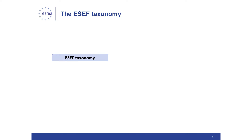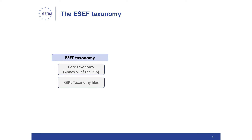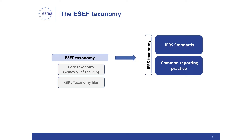Preparers also need to familiarize themselves with the ESEF taxonomy. The ESEF taxonomy is made up of two components: the schema of the core taxonomy, which is the list of all human-readable labels contained in the annex to the RTS, and the ESEF XBRL taxonomy files, which are published on ESMA's website. The ESEF taxonomy builds very closely on the IFRS taxonomy, which lists and defines the specific elements that preparers can use to identify or tag the information disclosed within IFRS financial statements.